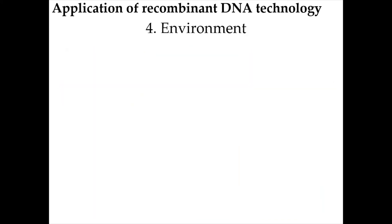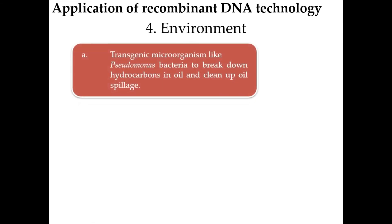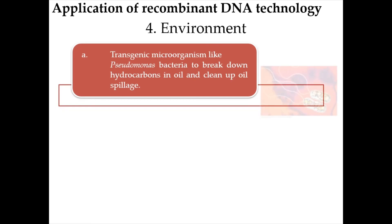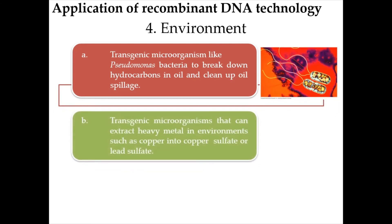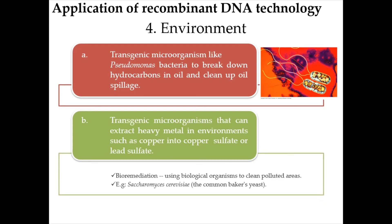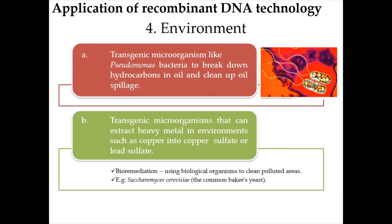The next application of recombinant DNA technology is in the environment. The first example is the use of transgenic microorganisms like Pseudomonas bacteria to break down hydrocarbons in oil and clean up oil spillage by aerobic respiration. Another example is the use of transgenic microorganisms like yeast that can extract heavy metals from the environment — such as copper and lead — and incorporate them into compounds such as copper sulfate or lead sulfate. This technology is called bioremediation, a branch of biotechnology that uses biological organisms to clean polluted areas.